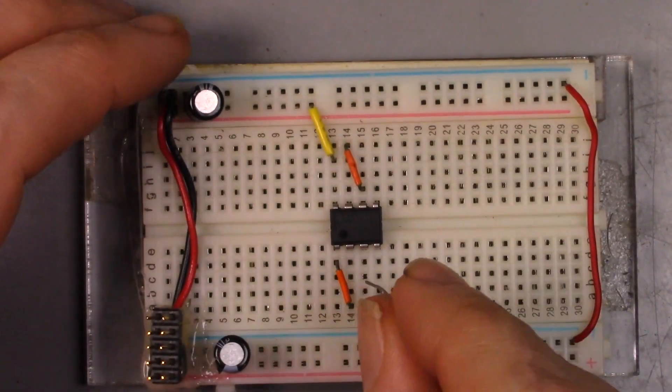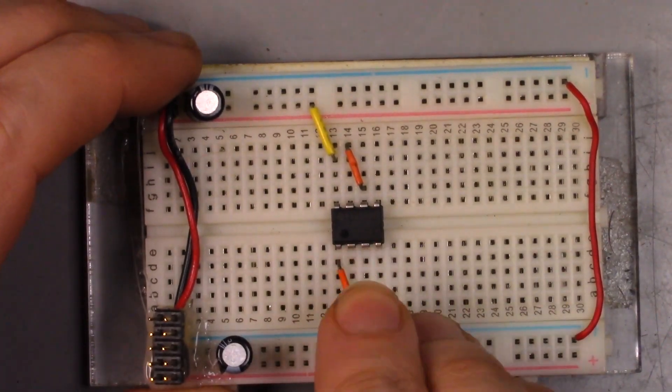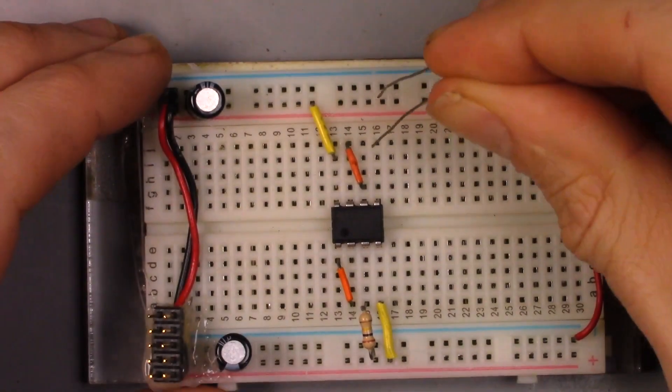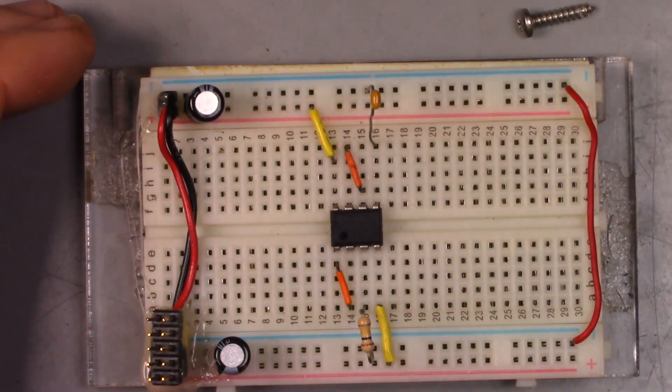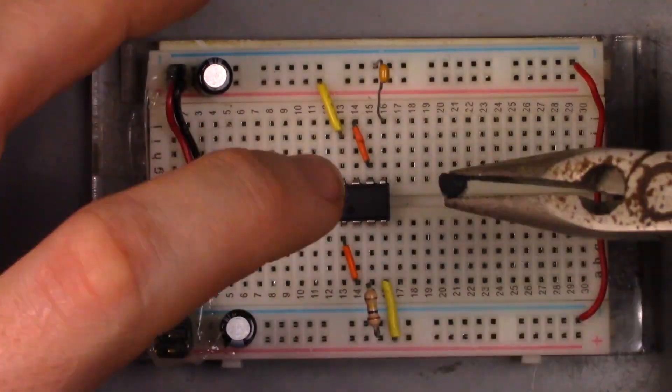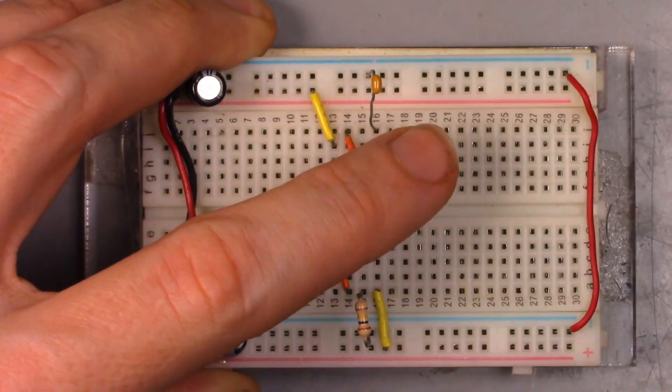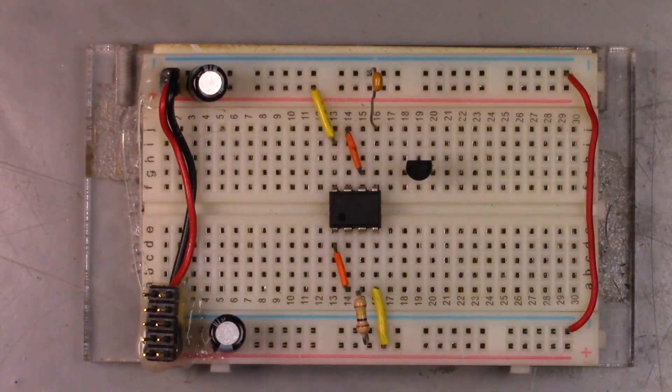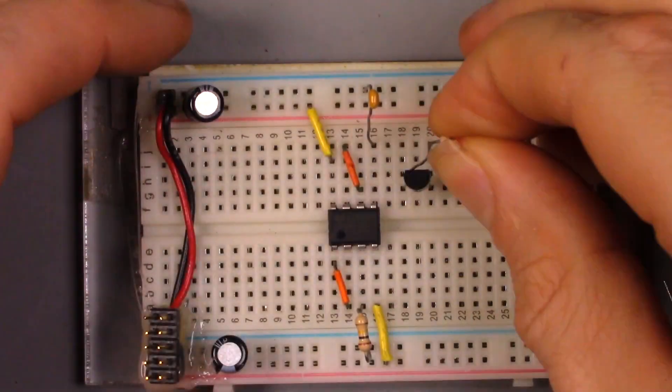The 100K resistor to reference ground on the input. The 682 hold capacitor. The JFET and the diodes and resistors that keep it in a normally off state.